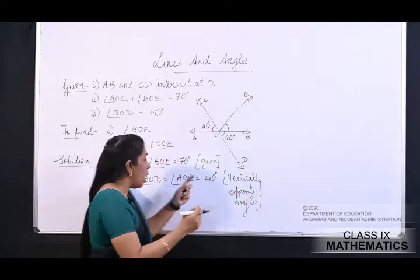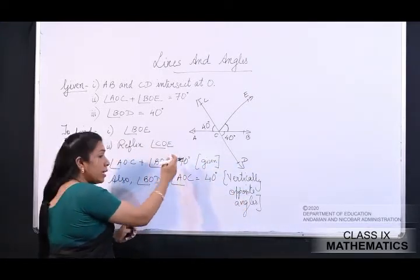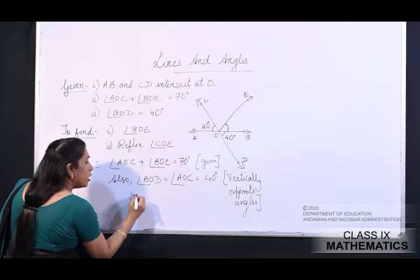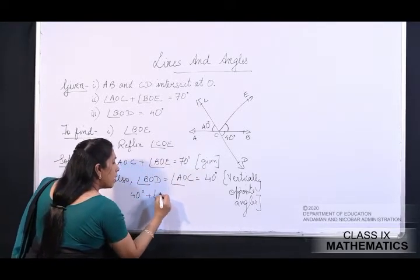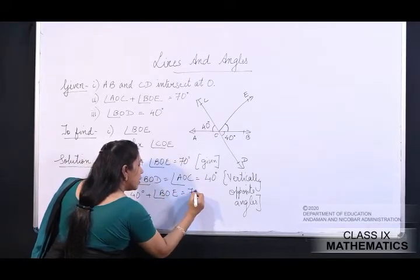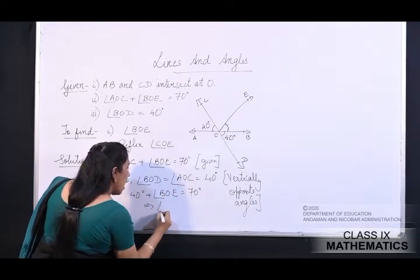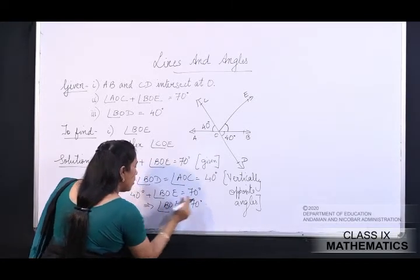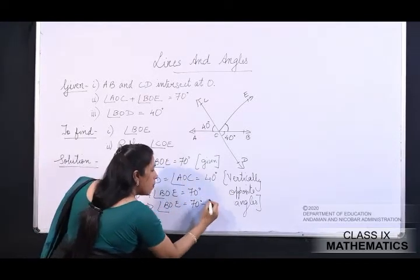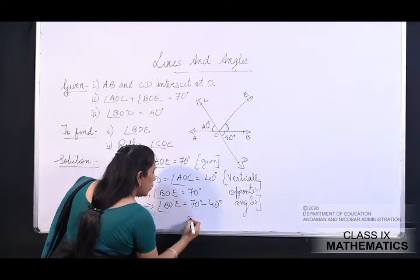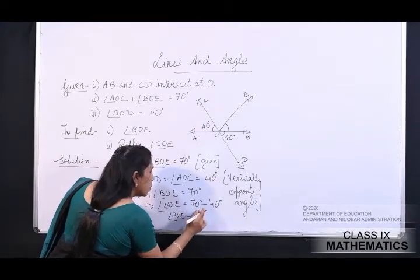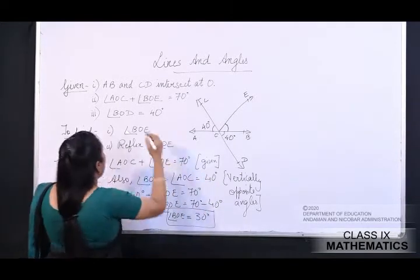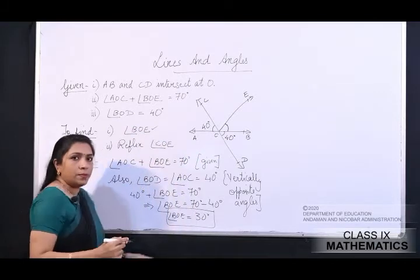Substituting: 40 degree plus angle BOE is equal to 70 degree. Therefore angle BOE is equal to 70 minus 40, which is 30 degree. Ye ho gaya hamara pahla answer.